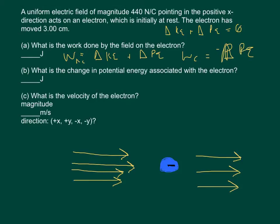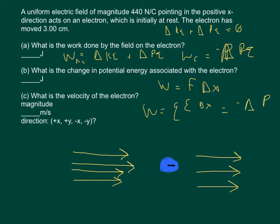For a conservative force, work is defined as negative times the change in potential energy. The reason for this is that work, regardless of conservative or non-conservative, equals force times delta x. So we can say work equals q times E — the charge times the electric field — times delta x, and set that equal to negative delta PE.